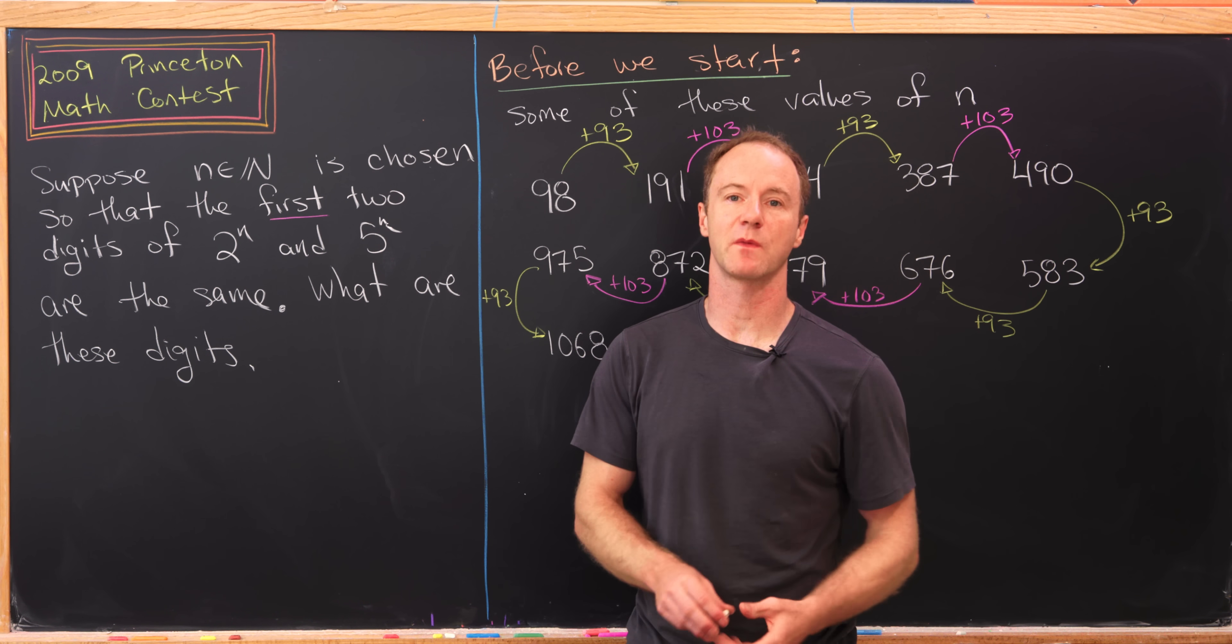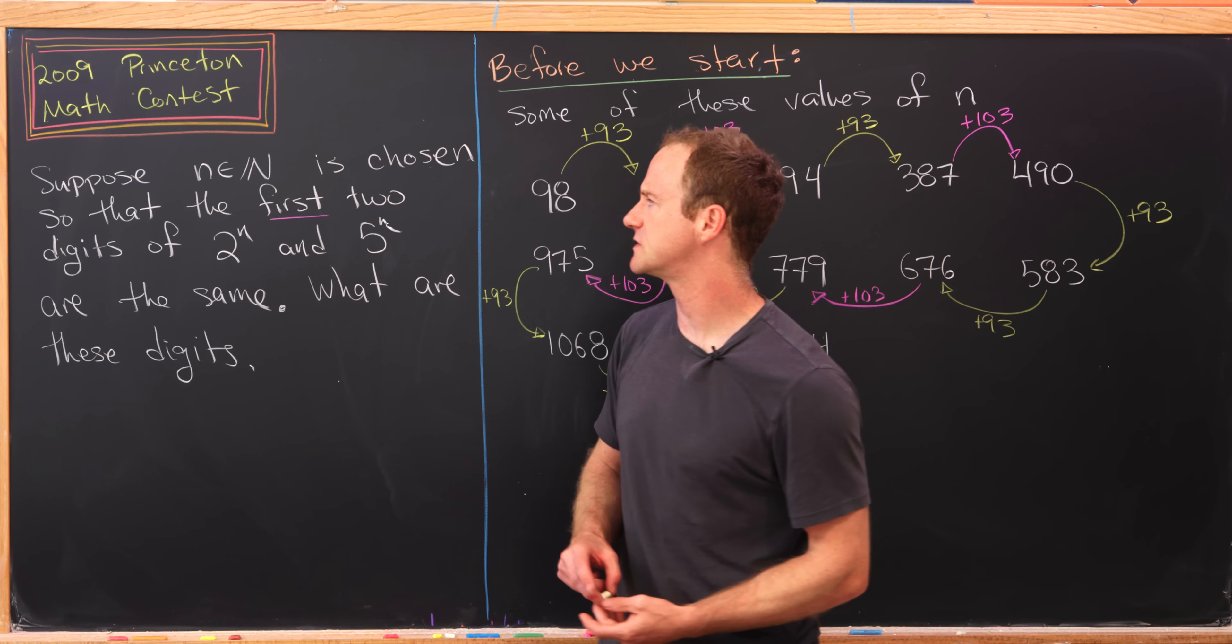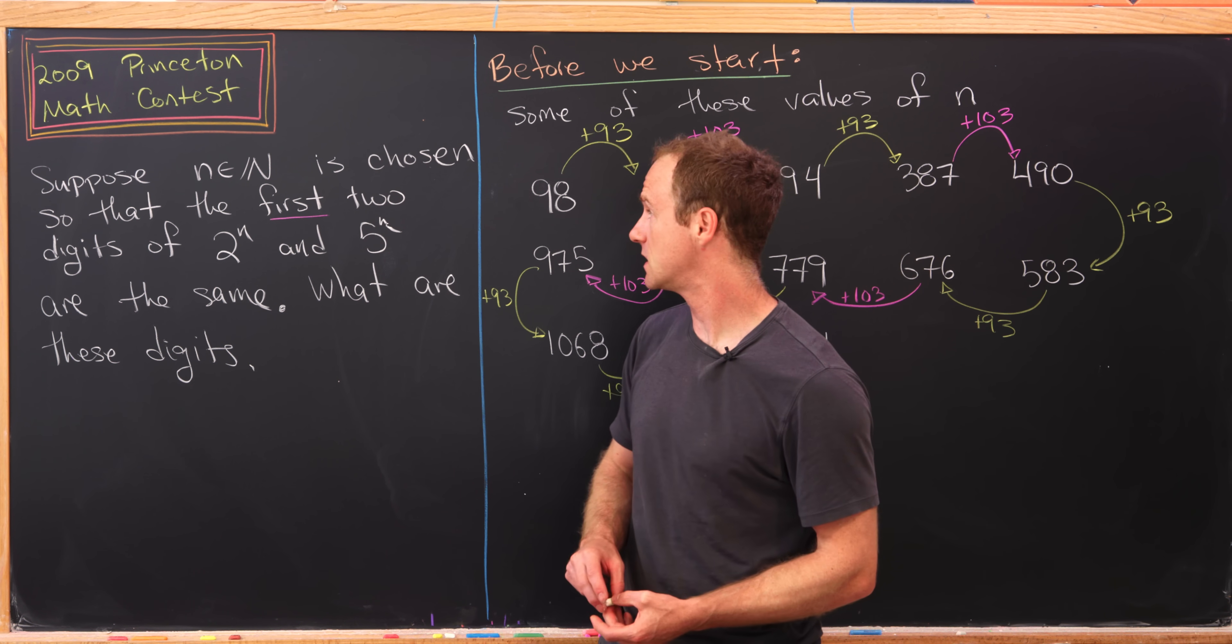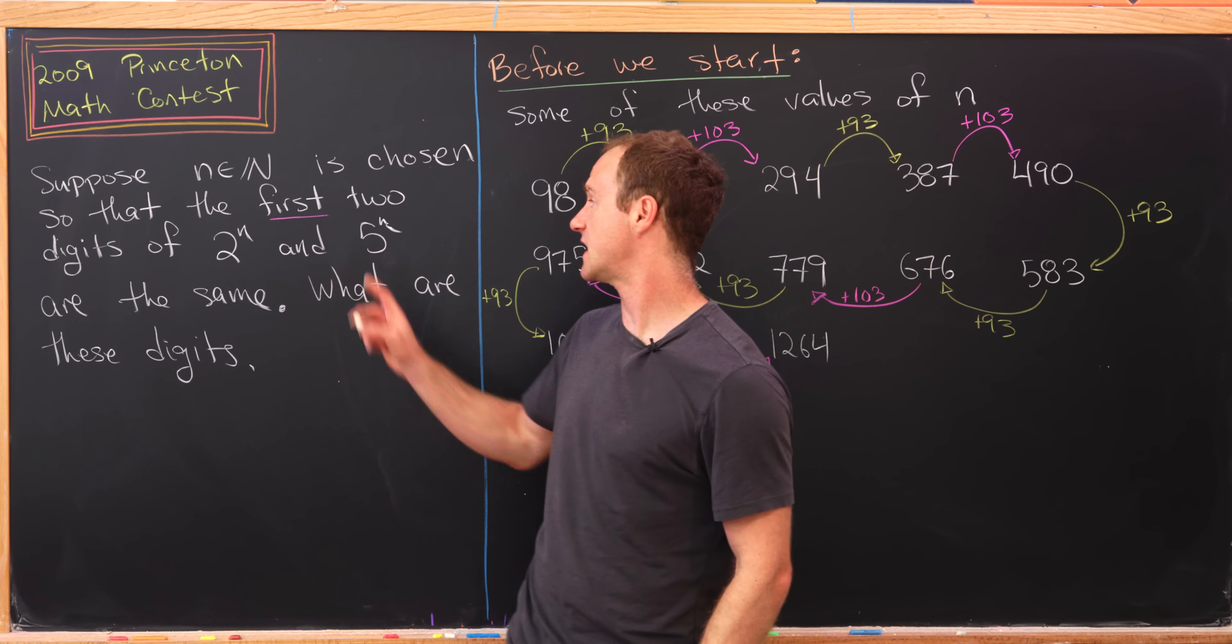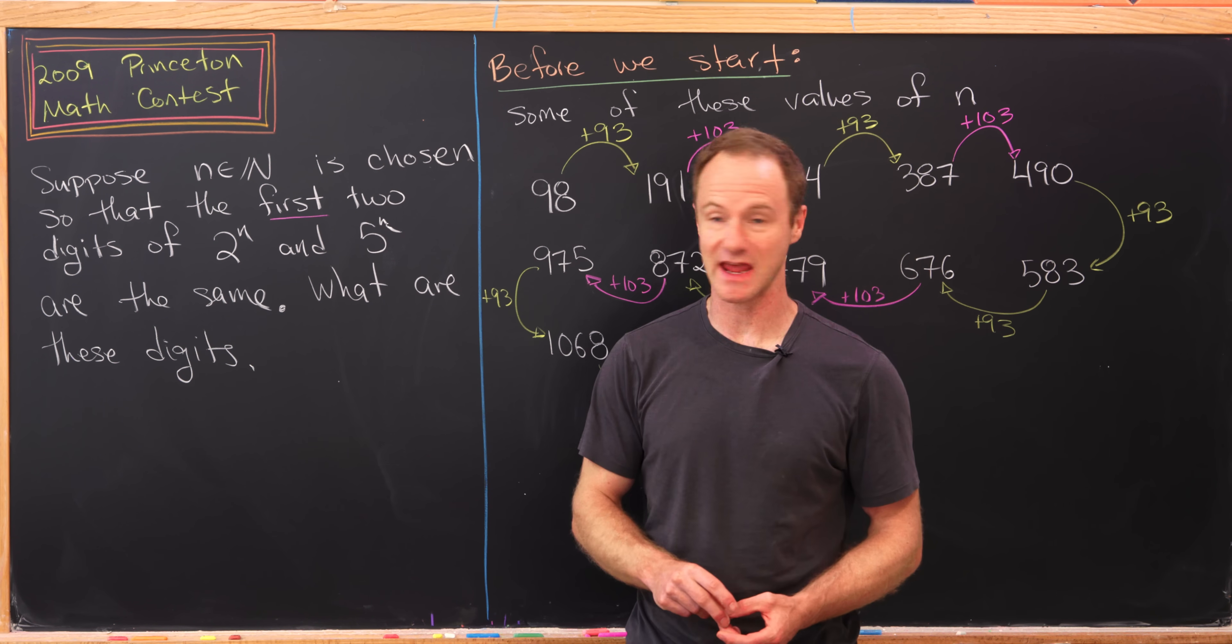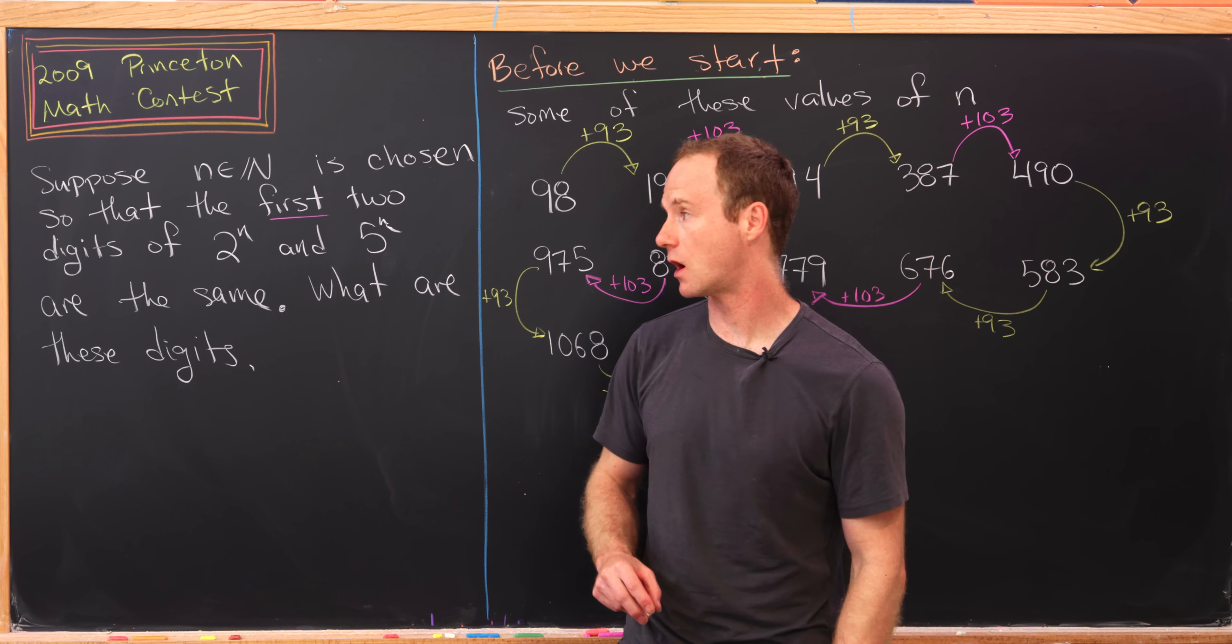Today let's look at a really nice problem from a Princeton University math contest. Suppose we've got a natural number n so that the first two digits of 2^n and 5^n are the same. Our goal is to determine what those digits are.